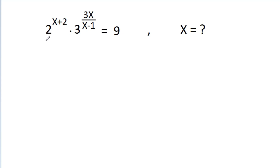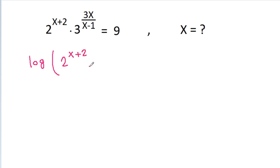In this video, we have given that the expression is equal to 9 and we have to find the value of x. So, if we take log both sides, then log of 2 power x plus 2 times 3 power 3x by x minus 1 will be equal to log of 9.